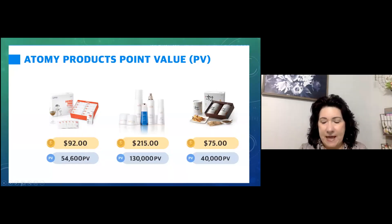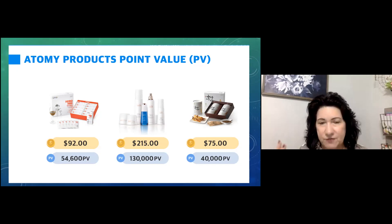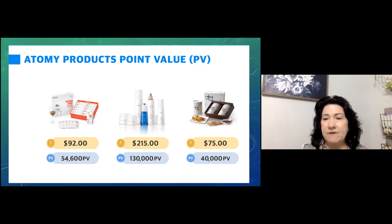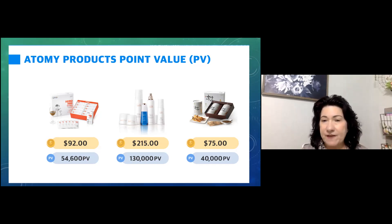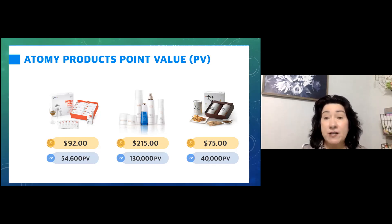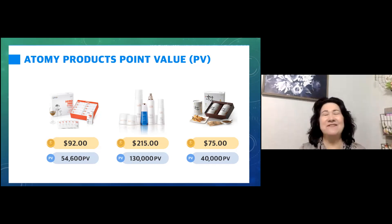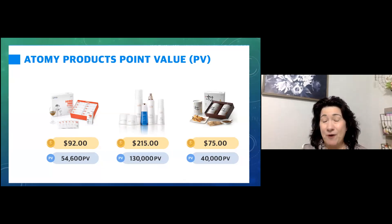If you're new to Atomy and have never done multi-level marketing before, you keep hearing the phrase PV tossed around. PV stands for point value — each Atomy product is assigned a value in points. For instance, a box of Hemohem for $92 gives you 54,600 PV. The Atomy Absolute Set has a point value of 130,000, and our Korean red ginseng (Hongsamdan) has a 40,000 point value.